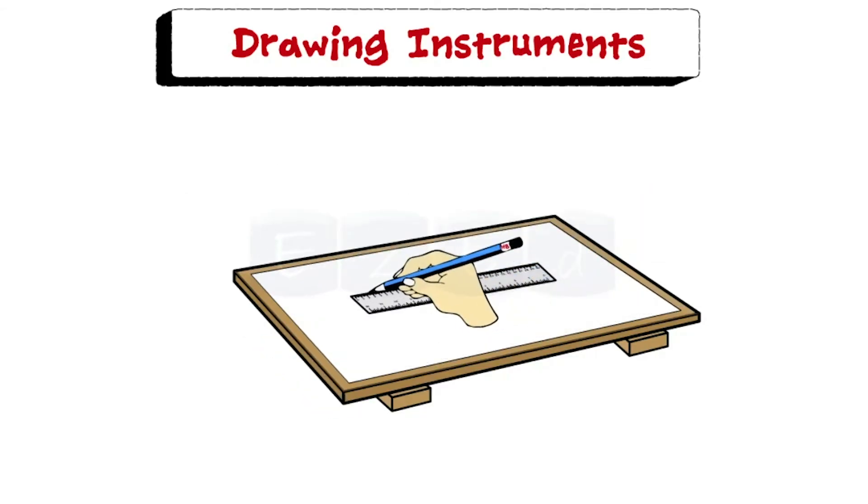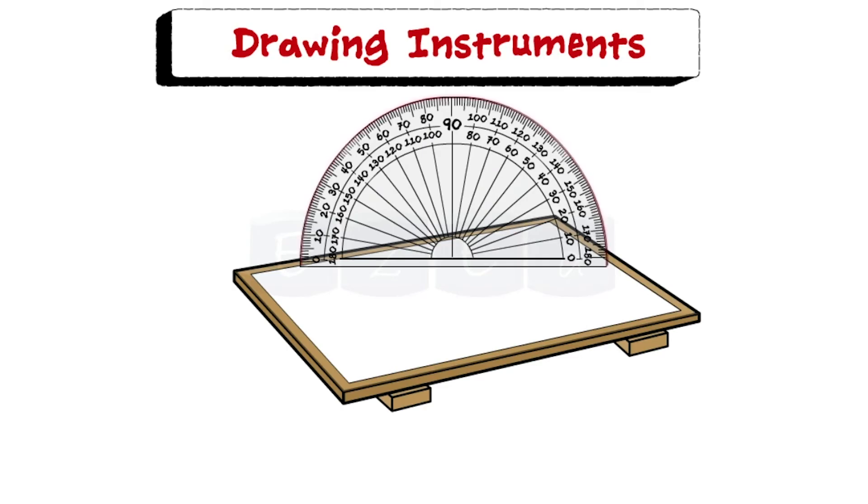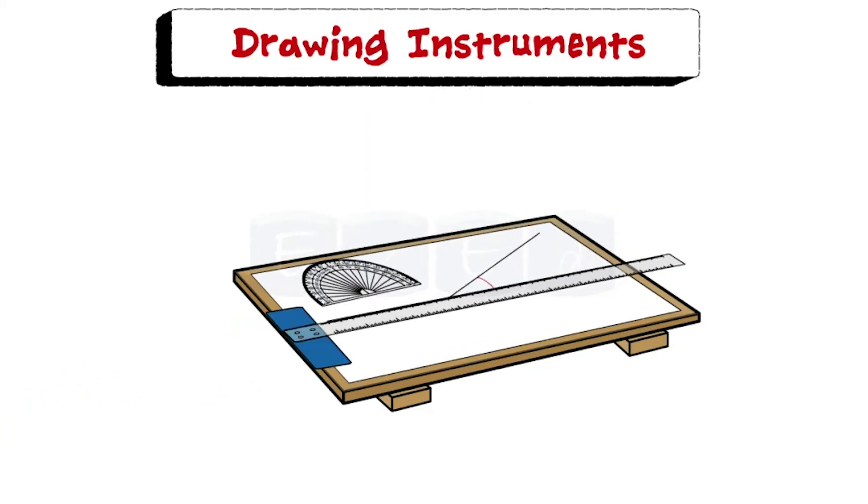A scale is used to draw lines of specific length. Protractor is flat and semi-circular in shape. Its circumferential edge is graduated to one degree divisions and is numbered at every 10 degree interval and is readable from both the ends. The protractor is used to draw or measure angles.